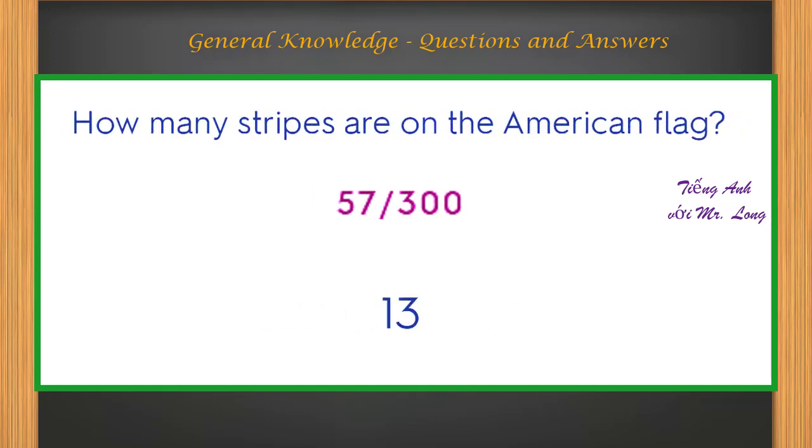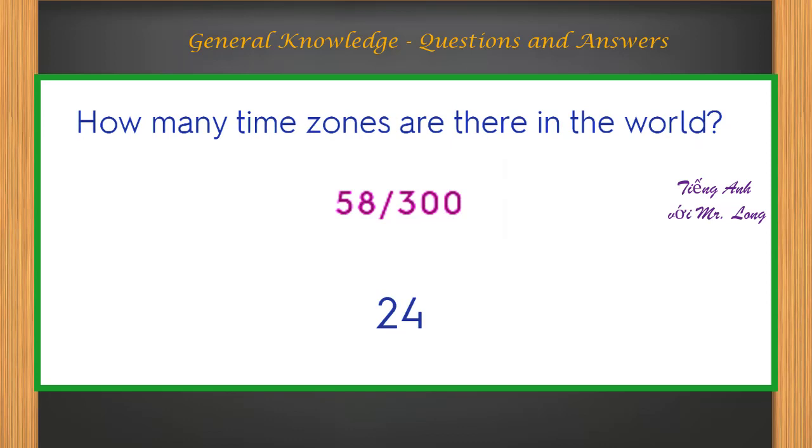How many stripes are on the American flag? Thirteen. How many time zones are there in the world? Twenty-four.